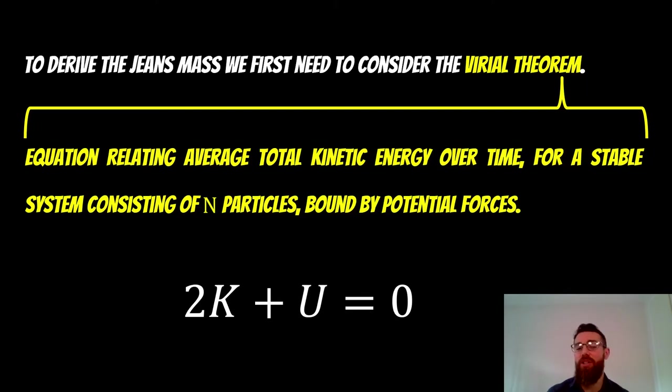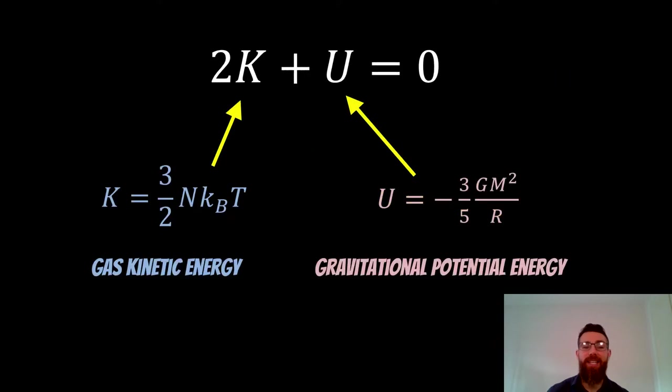So K is your kinetic energy and U is your potential forces. And we can basically equate those and rearrange for our mass when we do that. So the starting point is going to be our gas kinetic energy, which we've got on the left there.